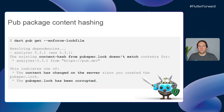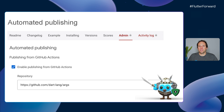In Dart 2.19, pub started to add content hashes to your pubspec lock files. Pub get will check these hashes when passed the --enforce-lockfile option. This will ensure that content downloaded by pub is the same content that was used to create the lock file. This is particularly relevant if you use a mirror. Because pub stores the hashes in the pubspec lock file, reviewers can notice unexpected changes.